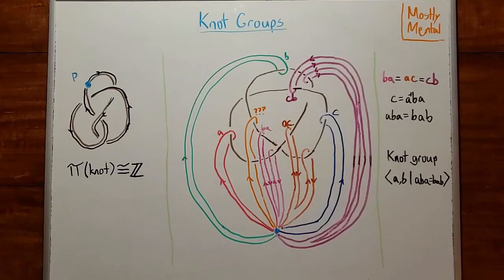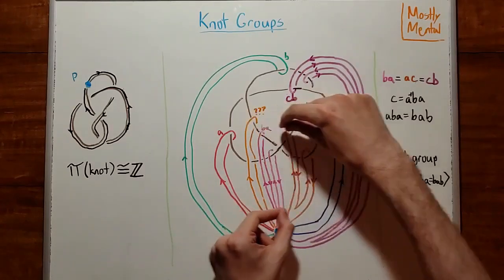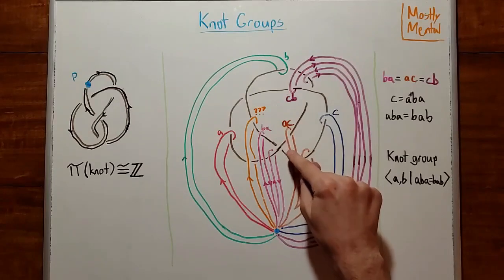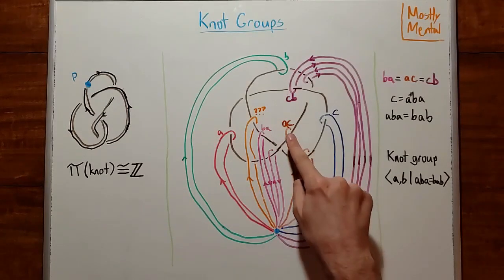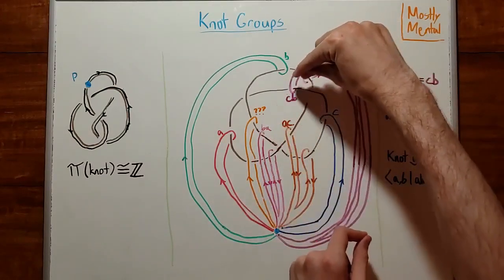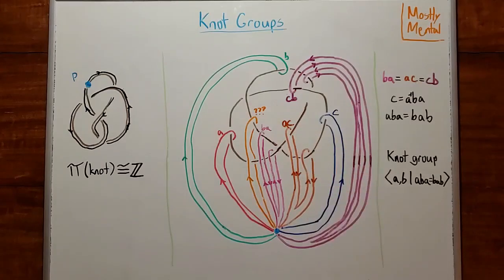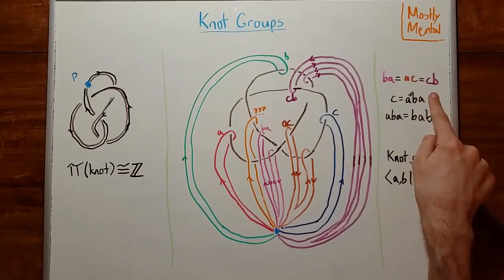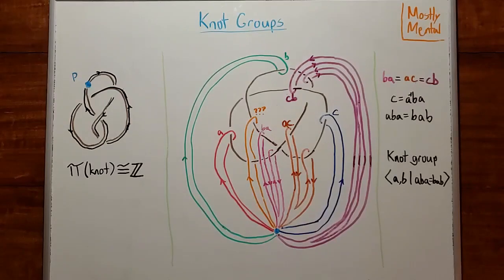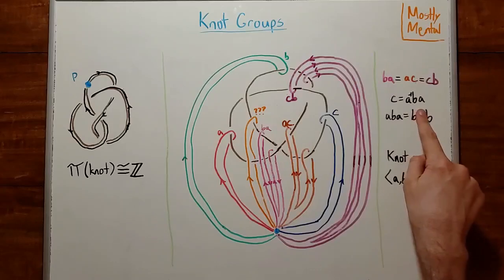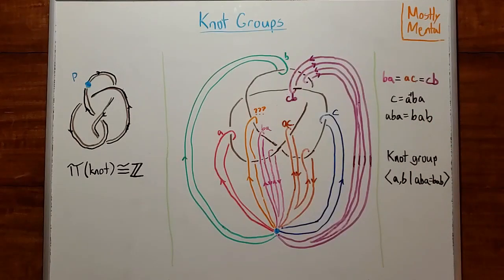But hang on, that's not the only way we can deform the loop. If instead we drag this over to this side before we bring it back, then we end up with a loop around A and then around C. So we have AC. Or if we drag this around to here, then we end up with CB. And since those are all the same loop, that means that BA must be equal to AC and CB. And if we play around with those equations a bit, we get that C is equal to A inverse BA, which means that we can make C using only A and B. And we also get this nice relationship here between A and B, which means that the knot group is defined by two elements, A and B, satisfying this relation.